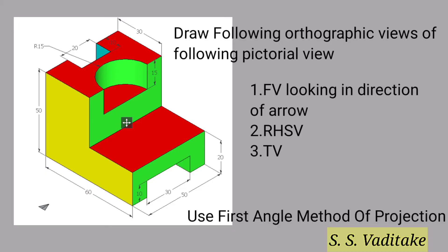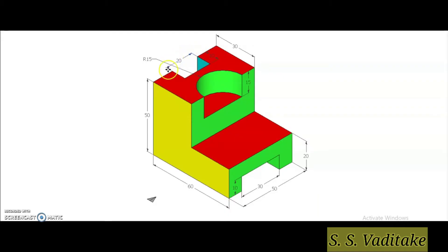Now we will learn how to draw the orthographic views of a given pictorial view. A pictorial view is given of which we have to draw three views: a front view looking in the direction of arrow, right hand side view, and a top view. Use the first angle method of projection to draw its three views. Observe the given component carefully and try to read the dimensions of each and every line shown in the 3D pictorial view.